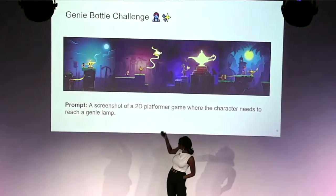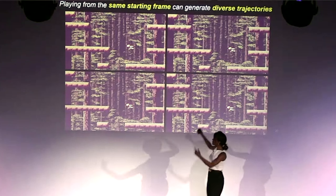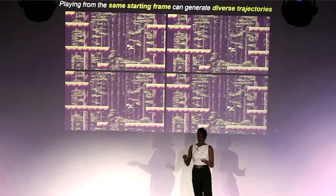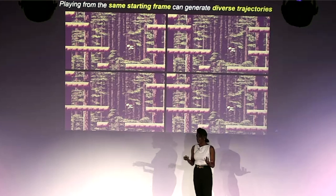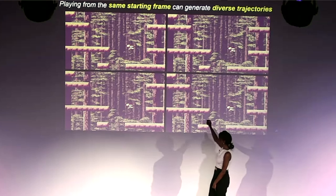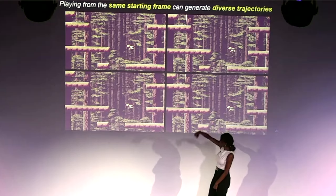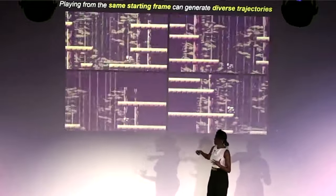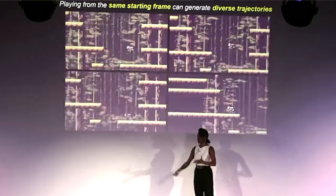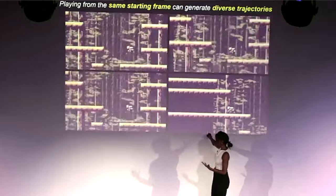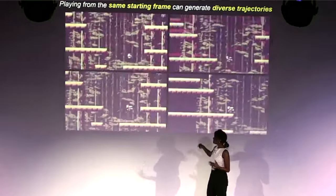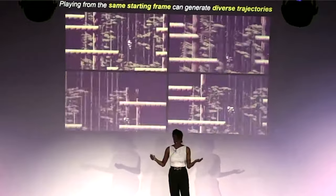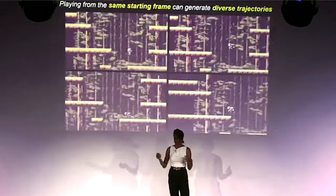These are initial prompt images showing what it looks like to interact with the model with real human interaction. Given the same prompt image but different latent action sequences, we see completely different and diverse trajectories being generated. We trained the model on 30,000 hours of publicly available internet gameplay consisting of hundreds of 2D platformer games. These results come from an 11 billion parameter model. The images used as prompts were actually all text-generated, and Genie was able to step into them and bring them to life.